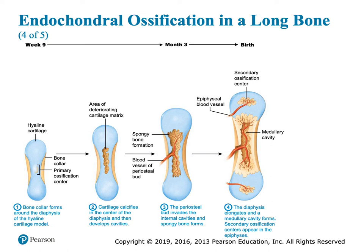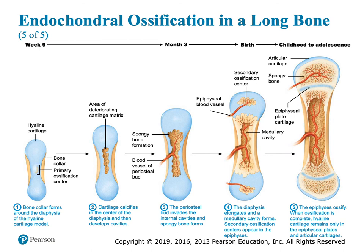This is why when you looked at that x-ray earlier, the child's epiphysis is so tiny. From childhood to adolescence, that cartilage area is going to get smaller and smaller as the secondary ossification center gets bigger and bigger. We still have an epiphyseal plate, because this is how bones are going to grow in length. This is showing how we've made a long bone from embryo to adolescent.